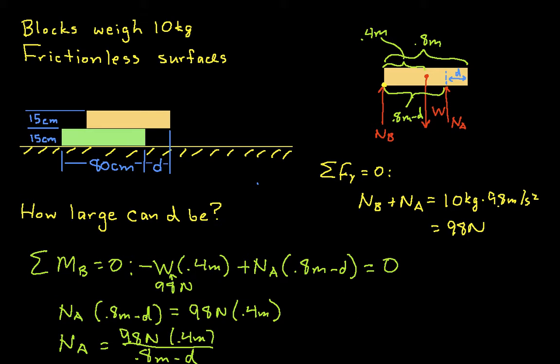And to find out what NB is then, we can take this expression for NA, plug it in here, and we'll have NB is equal to 98 newtons minus NA, which is 98 newtons times 0.4 meters over 0.8 meters minus D. And we can factor out 98 newtons and then we'll have a 1 minus 0.4 meters over 0.8 minus D.